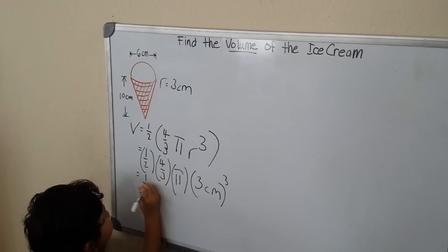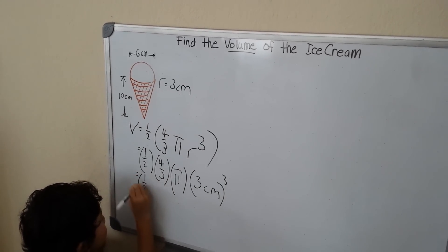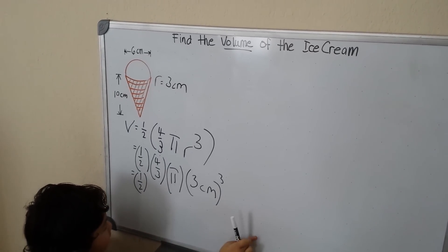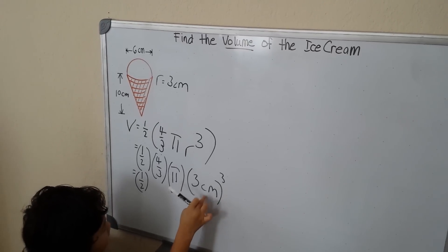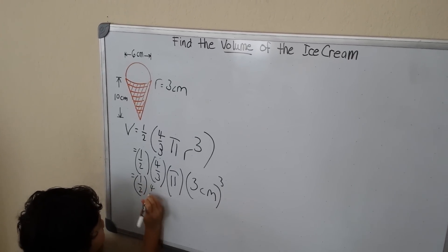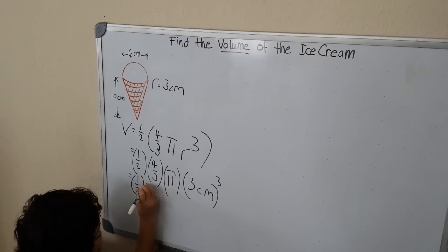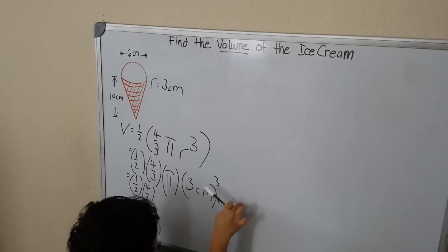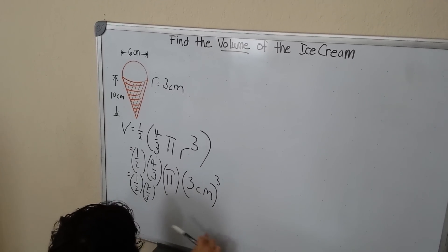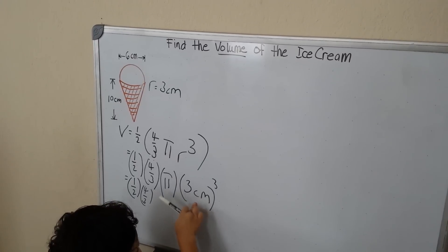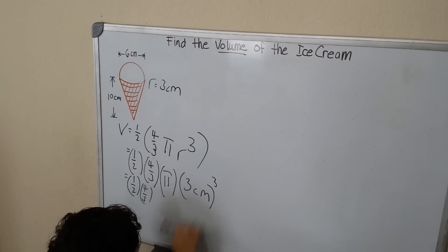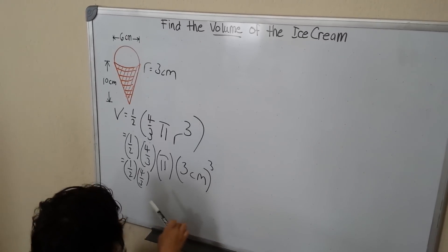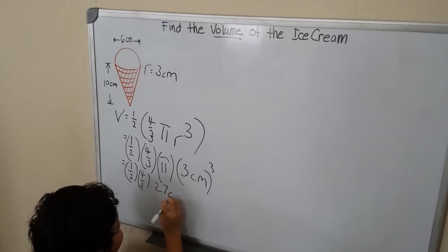We copy the 1 over 2 — 1 and a half — and put pi at the end, then simplify the exponent. 4 over 3, and then we simplify the exponent. 3 times 3 is 9, times 3 is 27. So r cubed equals 27.